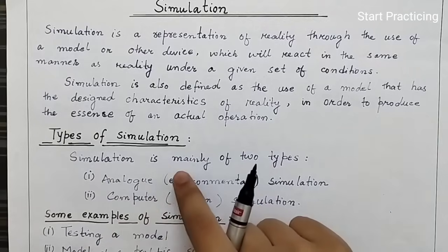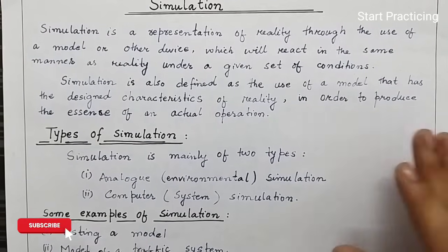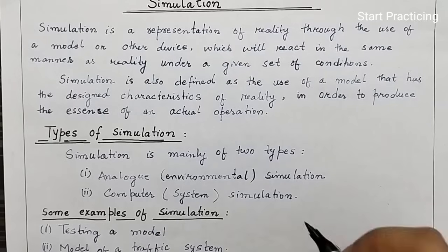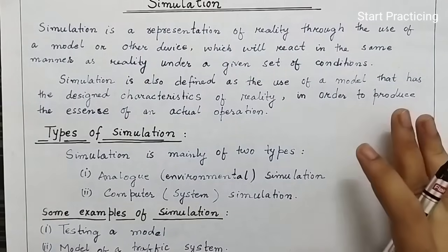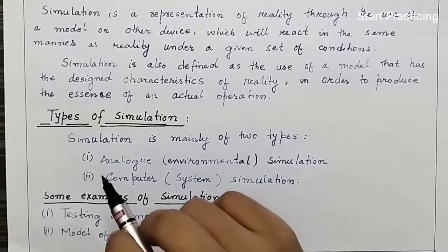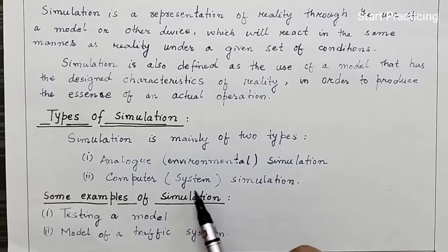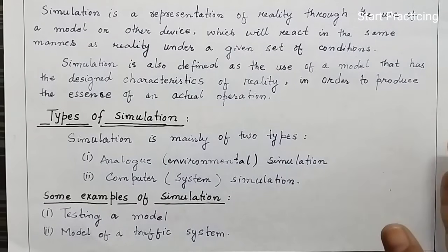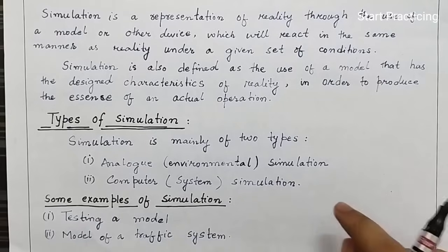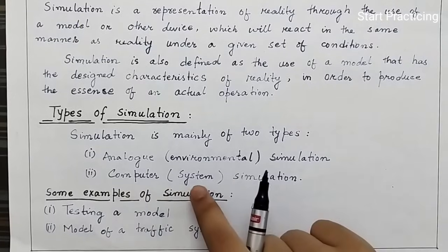Simulation is mainly of two types. All these definitions you need to remember very well — in exams they can be asked. I will provide the PDF in the description so you can check it out. The two types are: analog or environmental simulation, and computer or system simulation. If we create a small model or demo in real life, we call it analog or environmental simulation. If we implement and make it on the computer and then apply it, we call it computer or system simulation.